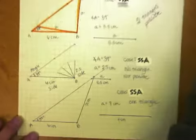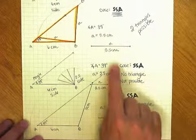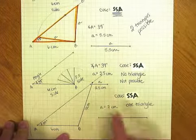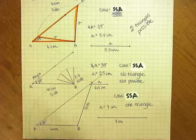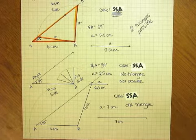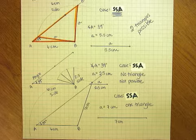Notice in this problem that depending on how long little side a is, you can get totally different solutions. It's kind of like Goldilocks where the porridge was either too hot or too cold or just right.